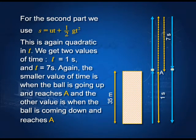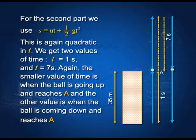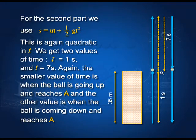For the second part, we need to find the time. We use s = ut + ½gt². Since this is quadratic in t, we get two values: t = 1 second and t = 7 seconds. Again, both are correct. One second is the time taken to reach 35 meters while going up. Seven seconds is the time for the ball to travel from the ground, reach the topmost point, and come back down to the 35-meter point. Both results are correct: t = 1 s going up, and t = 7 s going up and returning to the same point.